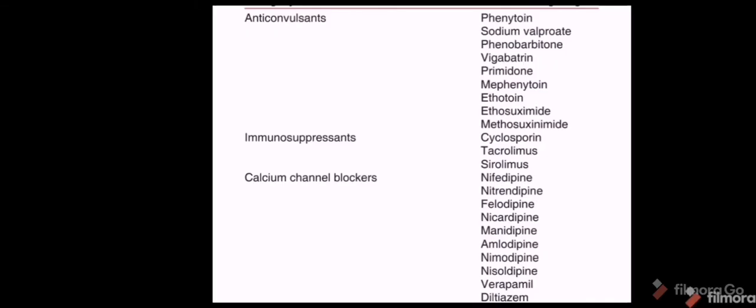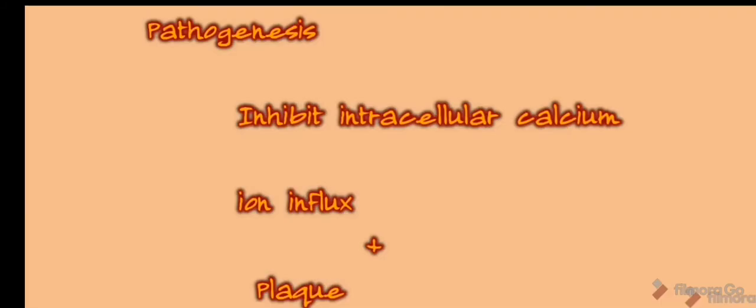The main drugs contributing to gingival enlargement are anticonvulsants, immunosuppressants, and calcium channel blockers. Erythromycin has also been found to contribute. All these drugs produce gingival enlargement by the mechanism of inhibiting intracellular calcium ion influx. In addition, dental plaque acts as a cofactor for gingival overgrowth when taking these systemic medications.